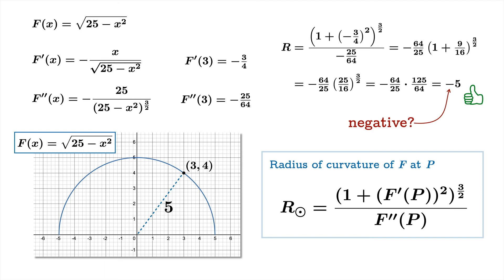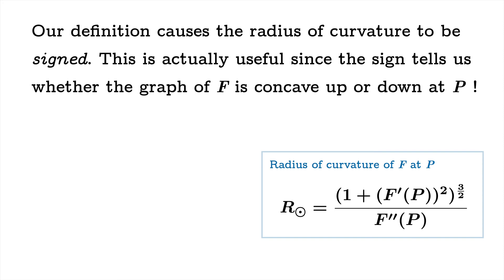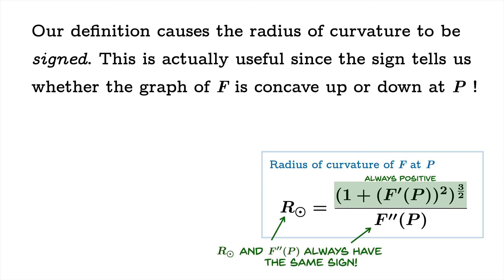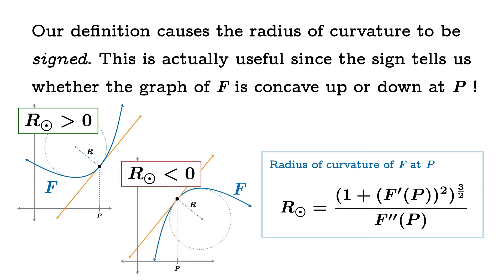Notice that our radius is negative. Our definition causes the radius of curvature to be signed, and this is actually useful: the sign tells us whether the graph of f is concave up or down at p. The numerator squares f′(p) and raises it to the three-halves power, so the numerator is always positive. That means the radius of curvature and the second derivative at p must have the same sign. When the radius of curvature is positive, the graph is concave up; when negative, concave down.